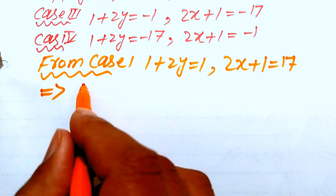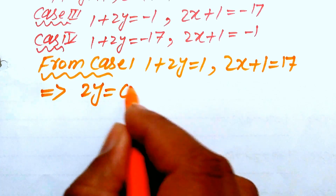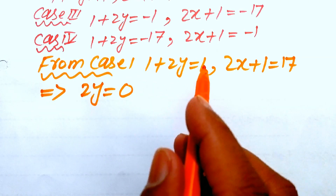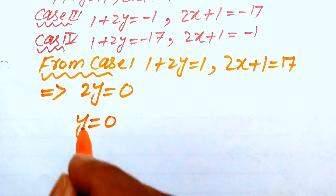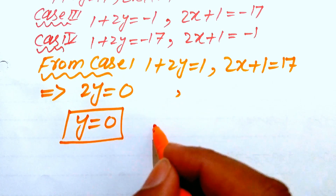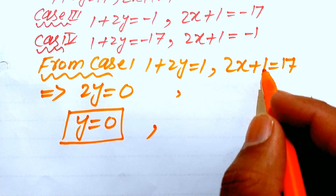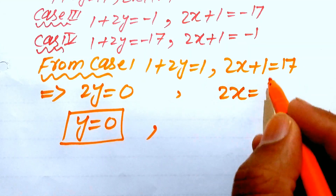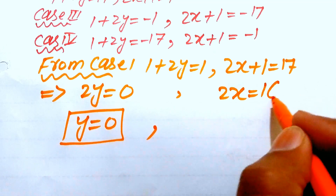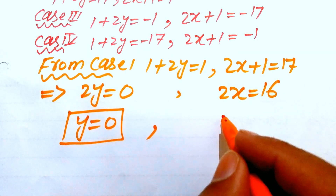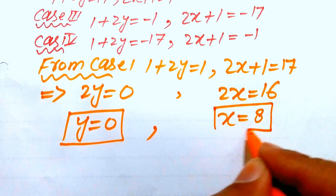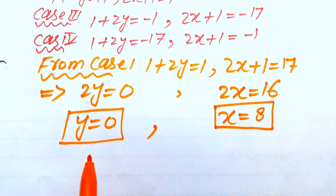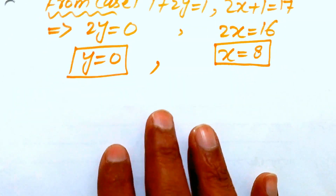Solving Case 1: from (1+2y)=1, moving 1 to the right gives 2y=0, so y=0. From (2x+1)=17, moving 1 to the right gives 2x=16, so x=8. In Case 1, x equals 8 and y equals 0.